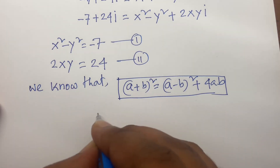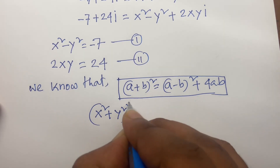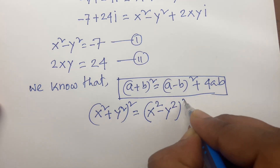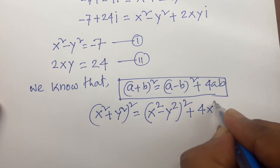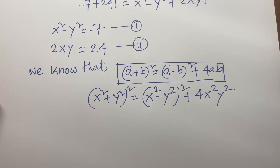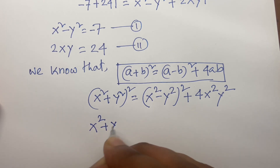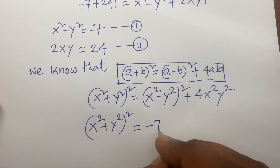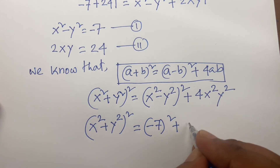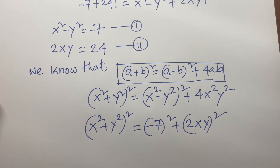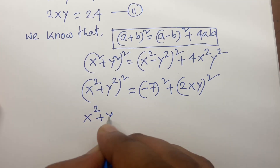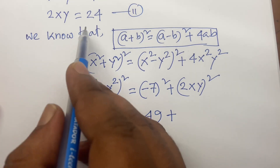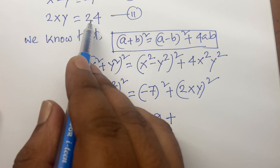So (x² + y²)² equals (x² − y²)² plus 4·x²·y². Substituting x² minus y² equals minus 7 and 2xy equals 24, we get (x² + y²)² equals (−7)² plus (24)² equals 49 plus 576.